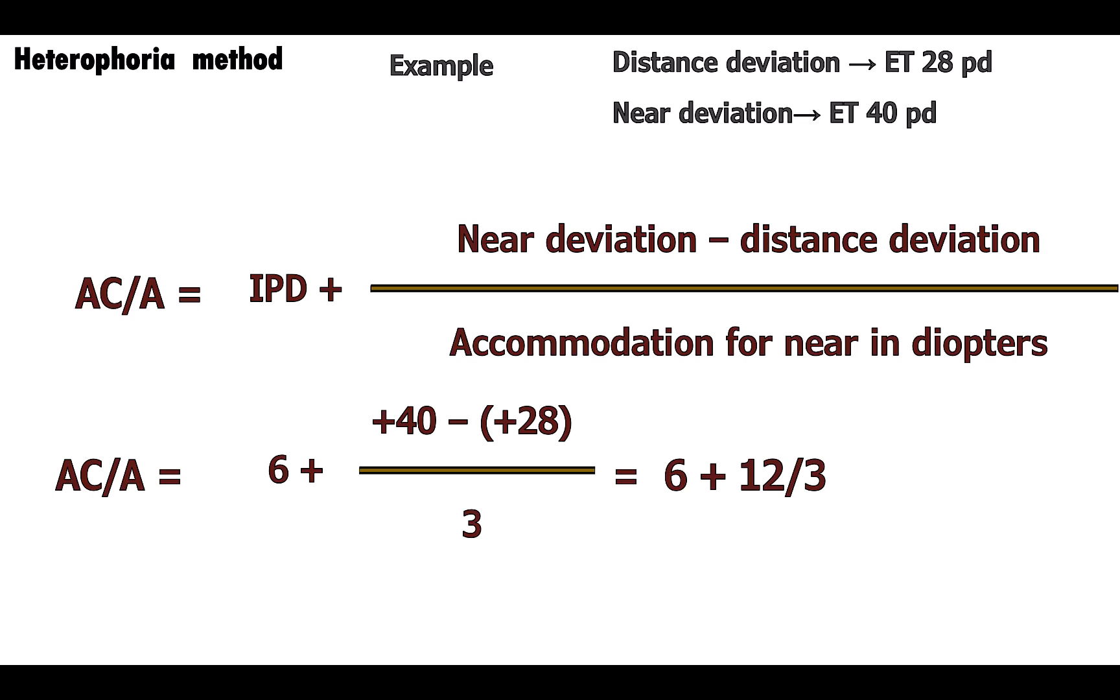This equals 6 plus 40 minus 28 divided by 3, which is 6 plus 12 divided by 3, equals 6 plus 4, equals 10 prism diopters per diopter. Considering the normal of 3 to 5, this is definitely a high AC/A ratio.